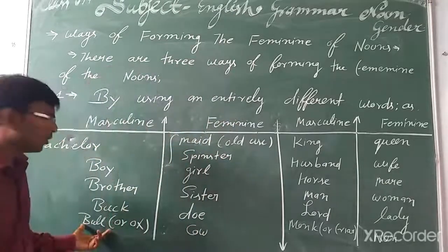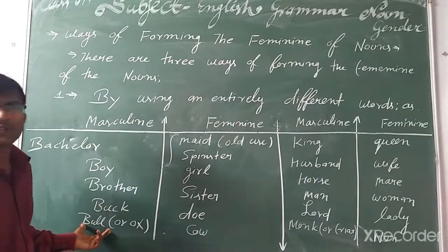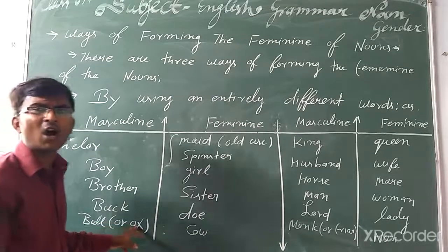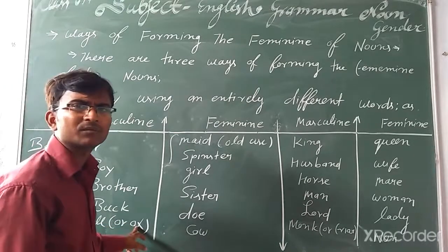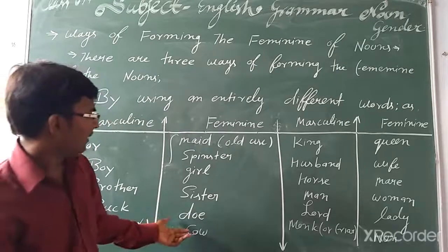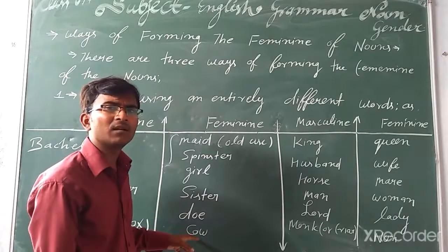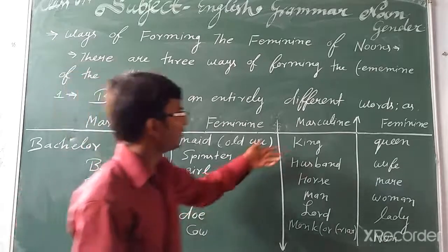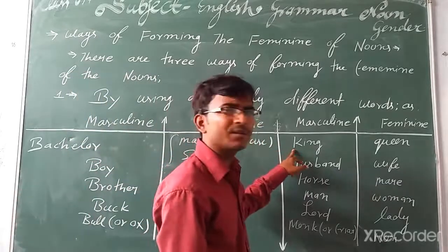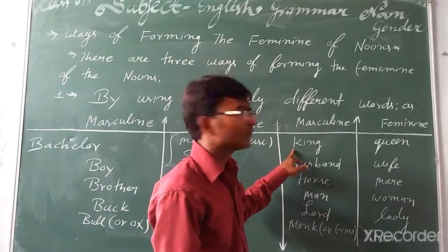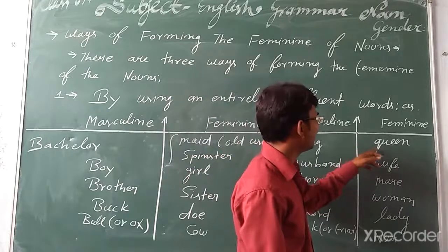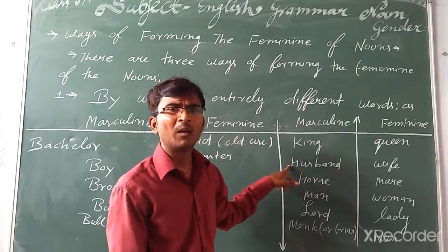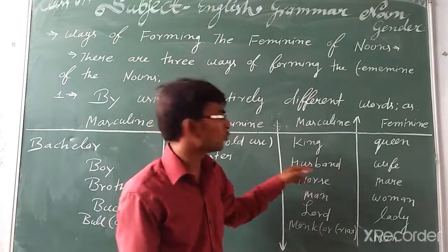Another example: 'bull' is the masculine gender — some people also say 'ox'. The feminine gender of bull is 'cow'. Now let us see more pairs: 'king' — the feminine gender is 'queen'. 'Husband' — the feminine gender is 'wife'.